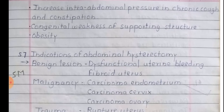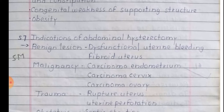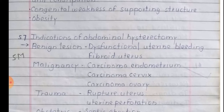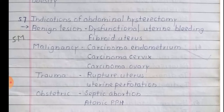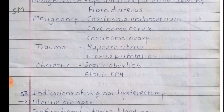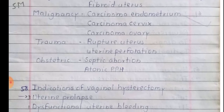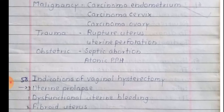Indications of abdominal hysterectomy. Benign lesions include dysfunctional uterine bleeding, fibroid uterus. Malignancy includes carcinoma endometrium, carcinoma cervix, and carcinoma ovary. Trauma indications include rupture of uterus and uterine perforation. Obstetric conditions include septic abortion and atonic PPH — postpartum hemorrhage.